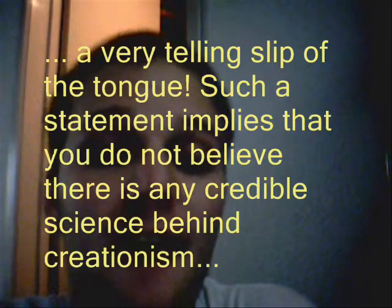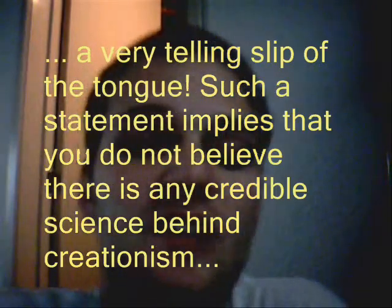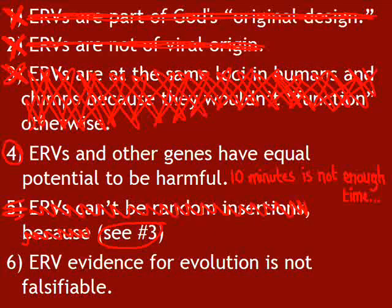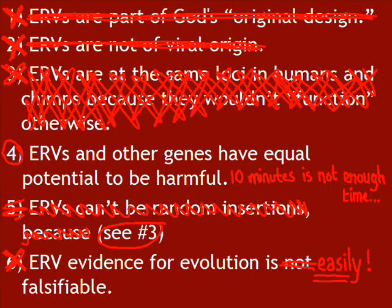You said, and I'm paraphrasing, that ERVs are compatible with both science and creationism. Now this might be true, but they still more strongly support the evolutionary model. If you don't understand why, I recommend you check out Urban Elf's video on Bayesian inference, which I'll link here. I think I've successfully shown that your assumptions are essentially flawed, and that ERV evidence can indeed be used to support the theory of evolution, and it can indeed be falsified. Feel free to respond to this, and I'll be happy to pick up this debate at a later time. Thanks for watching.